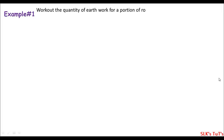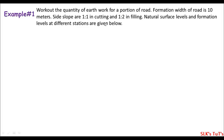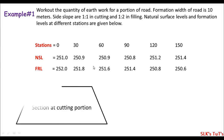Let's say this is Example 1. In this example we have a portion of a road and we are asked to work out the quantities of earthwork for this portion of road. The formation width of the road is 10 meters. The side slopes are also given: in cutting we have 1:1, and in filling we have 1:2. The natural surface level and the formation level at different stations are given at stations 0, 30, 60, 90, 120, and 150. So the road portion is from 0 meter to 150 meter.